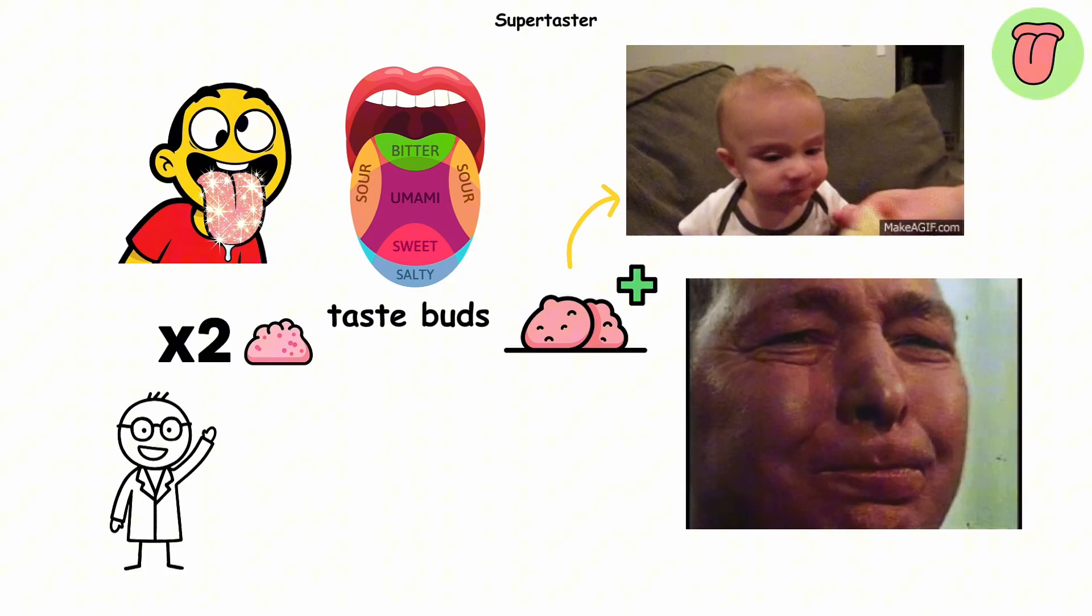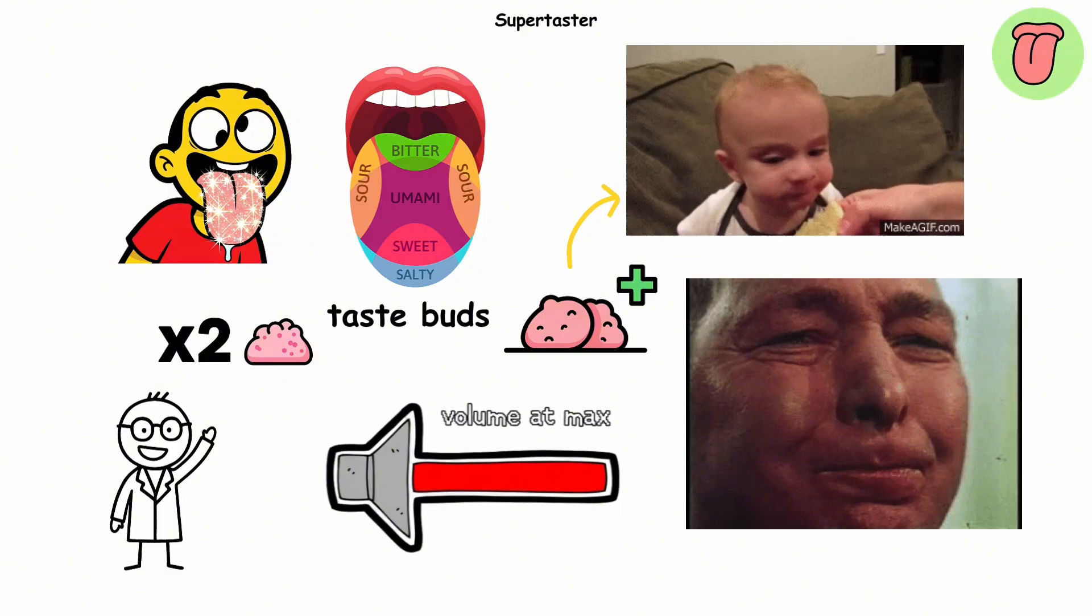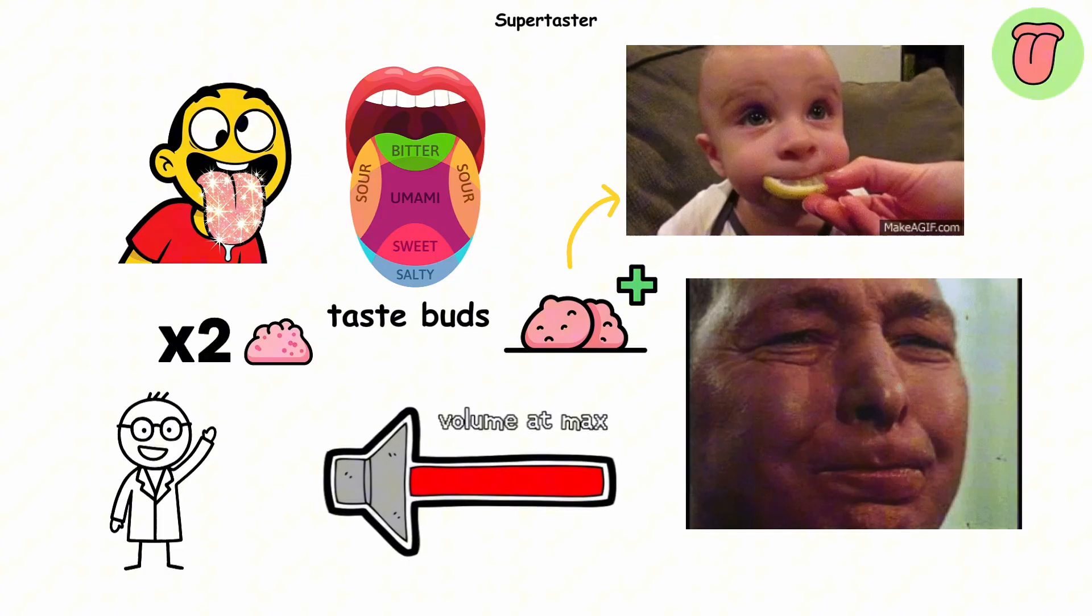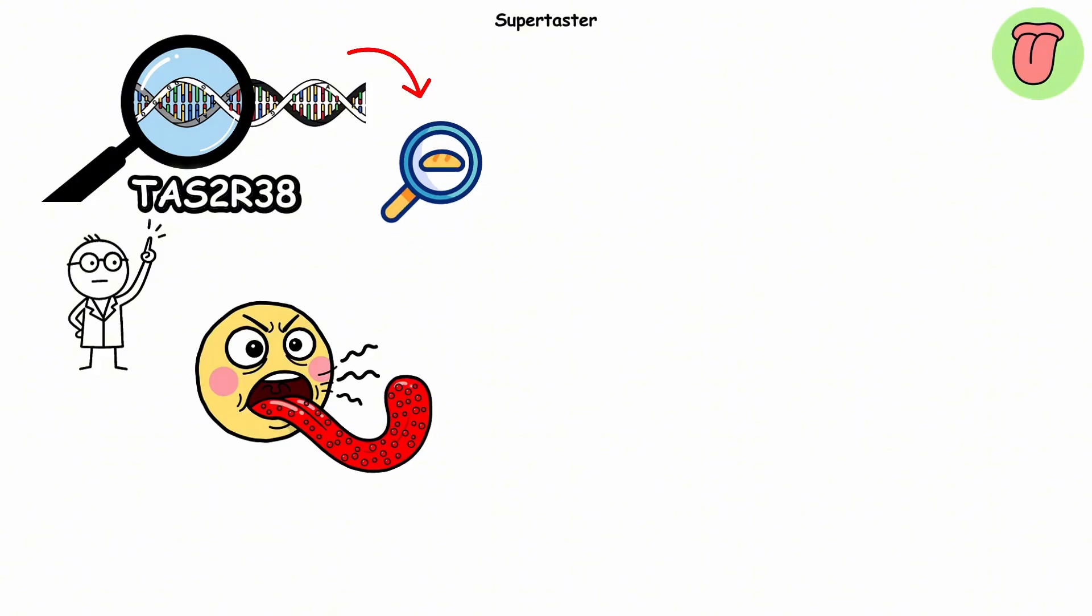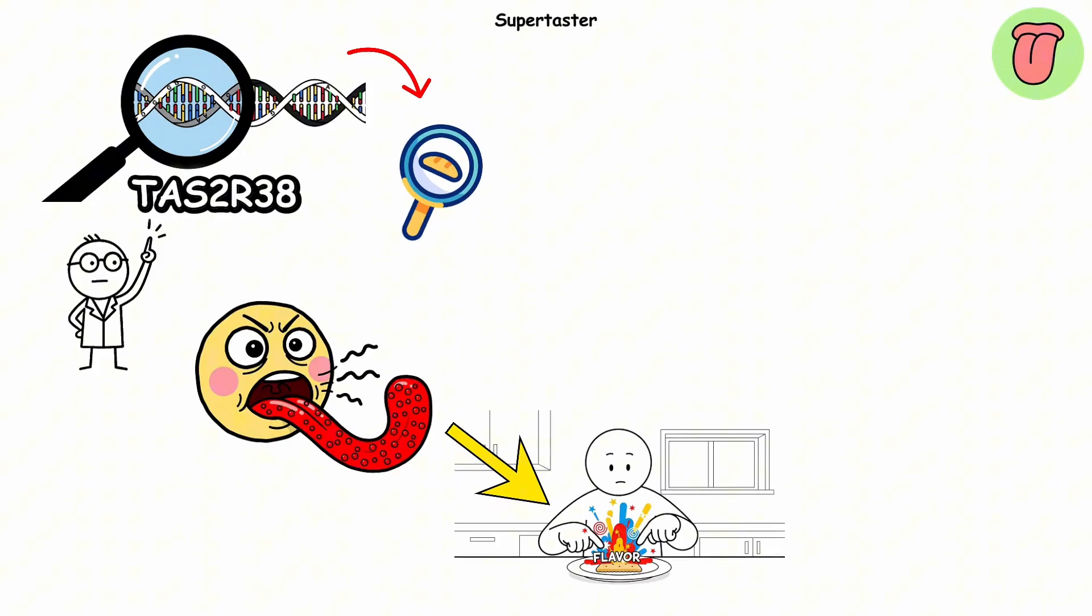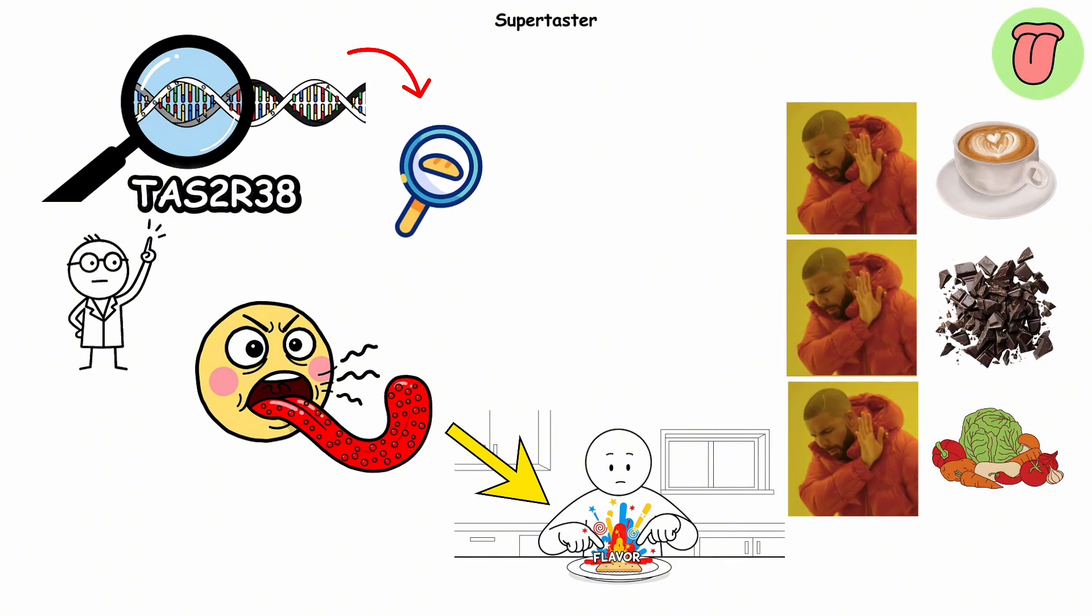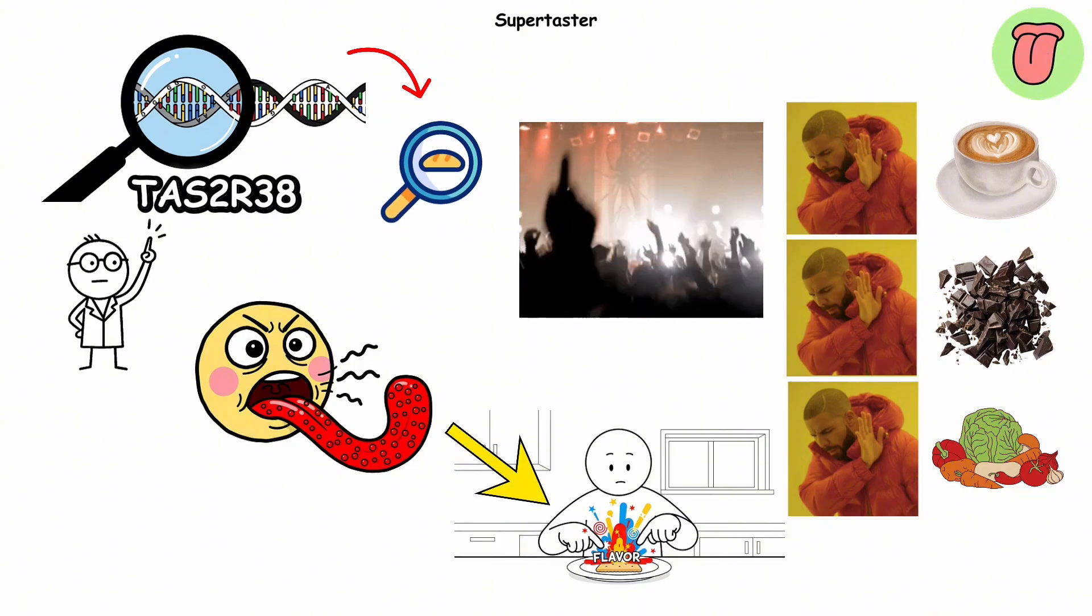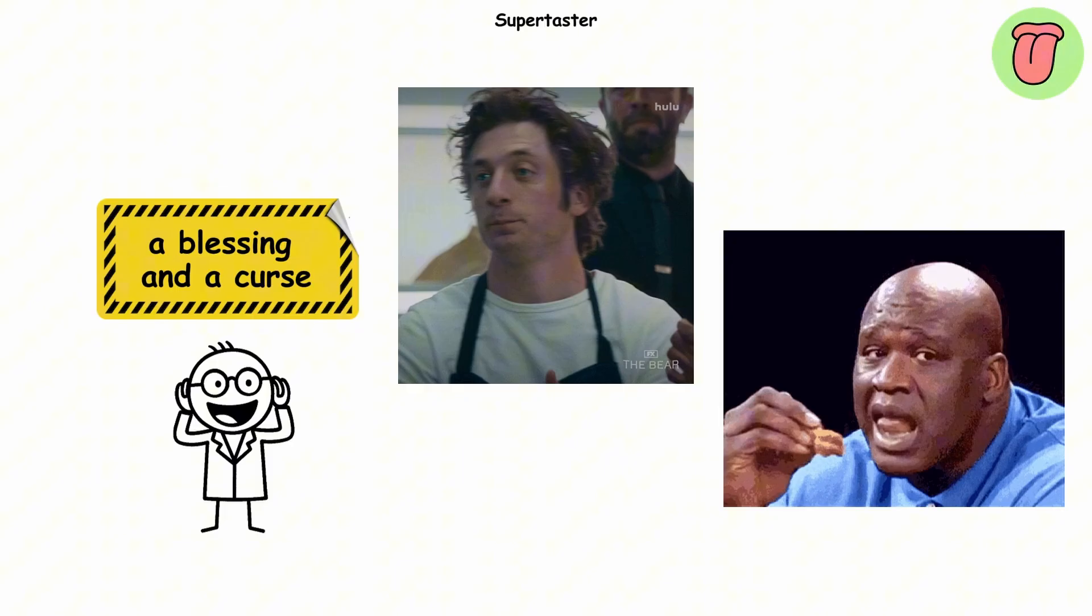Bitter foods? Way more bitter. Sweet treats? Almost overwhelming. It's like your taste buds are running the volume at max, while everyone else is still at medium. The reason comes down to a gene called TAS2R38, which affects how you detect different compounds. If you've got the supertaster version, even mild foods can taste intense. That's why many supertasters avoid coffee, dark chocolate, or strong veggies. Not because they're picky, but because their mouth is throwing a full-blown flavor concert. It's both a blessing and a curse. Gourmet-level perception, but constant sensory chaos.